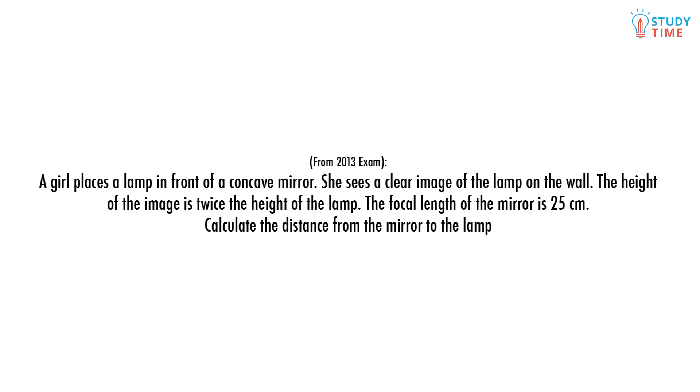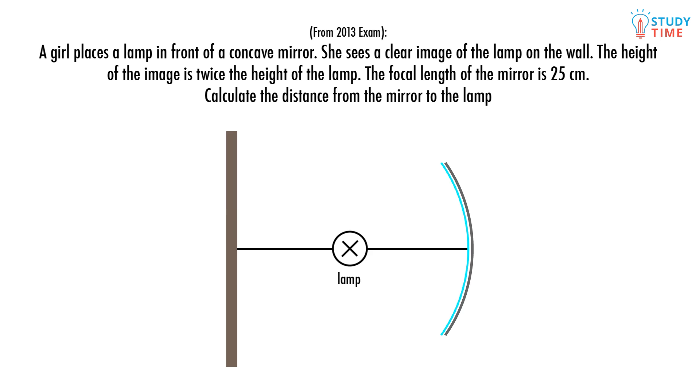A girl places a lamp in front of a concave mirror. She sees a clear image of the lamp on the wall. The height of the image is twice the height of the lamp. The focal length of the mirror is 25 centimeters. Calculate the distance from the mirror to the lamp. This question is going to use a few equations, so...